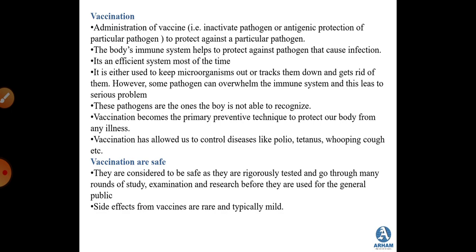Sometimes pathogens overwhelm the immune system and lead to serious problems, particularly pathogens the body cannot recognize. Vaccination teaches the immune system how to recognize and eliminate pathogens so the body is always prepared. It is a primary prevention technique that has allowed us to control diseases like polio, tetanus, and whooping cough.